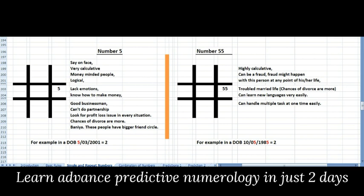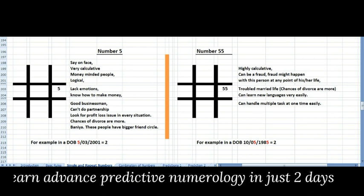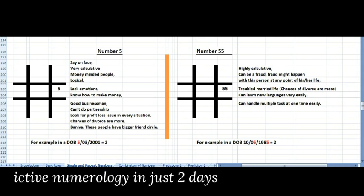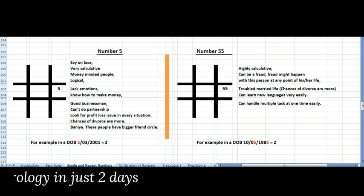If 5 comes once in a date of birth, then the person becomes very blunt. They say everything on their face without concern about what others may think about it.